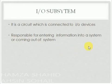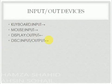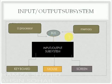In this video we'll talk about what is an input output subsystem. It is a circuit that is responsible for entering information into a system or coming out of a system. The circuit is connected to input output devices such as keyboard, mouse, display, and many more. In this diagram there is an input output subsystem that is connected to input devices — mouse, keyboard, and screen.